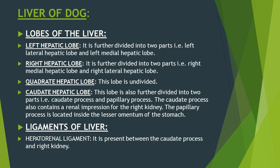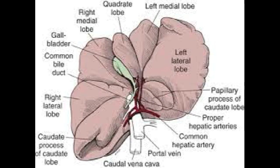Now let's move to the liver of dog. There are four lobes of the dog liver: left hepatic lobe, right hepatic lobe, quadrate hepatic lobe, and caudate hepatic lobe.